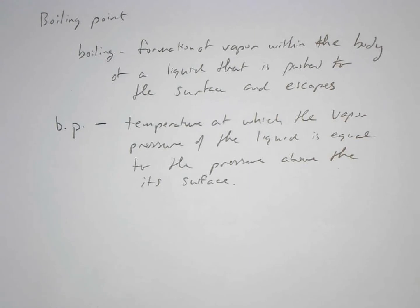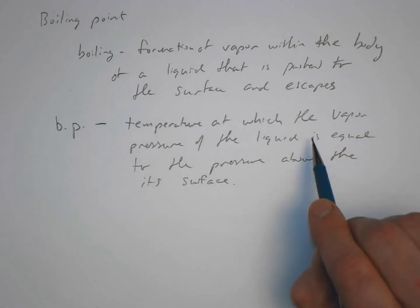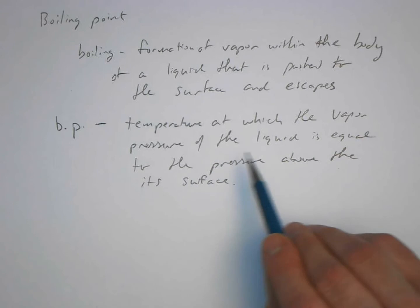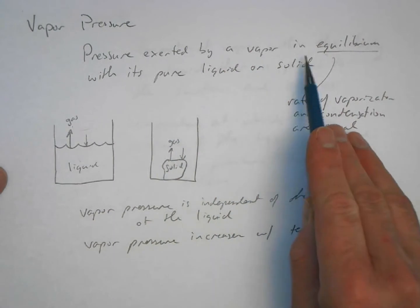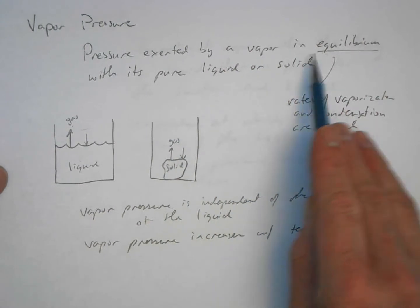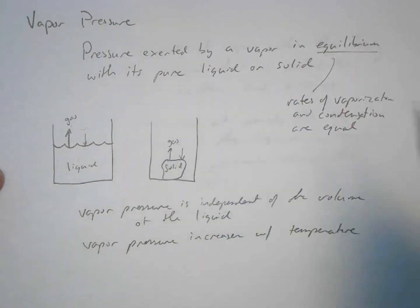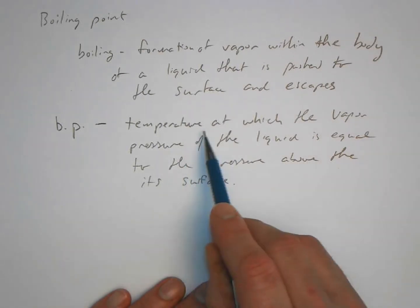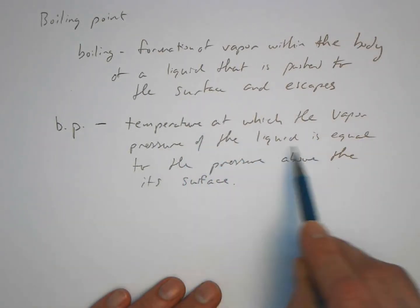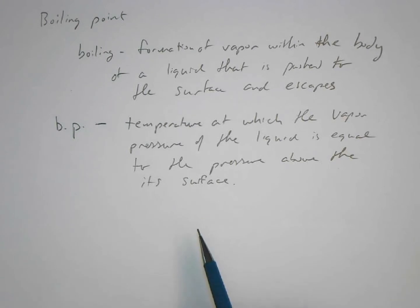So the boiling point, the temperature at which something boils, is when the vapor pressure of the liquid, the pressure that's exerted by that vapor when it's in equilibrium with its pure liquid or solid—we'll talk about it as being a liquid here because we're talking about boiling—is equal to the pressure above its surface.